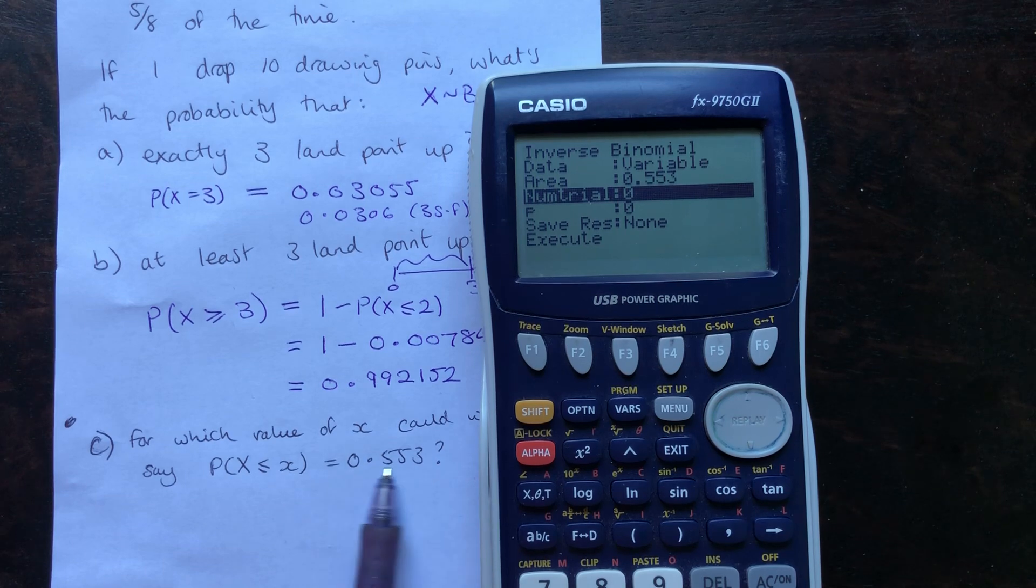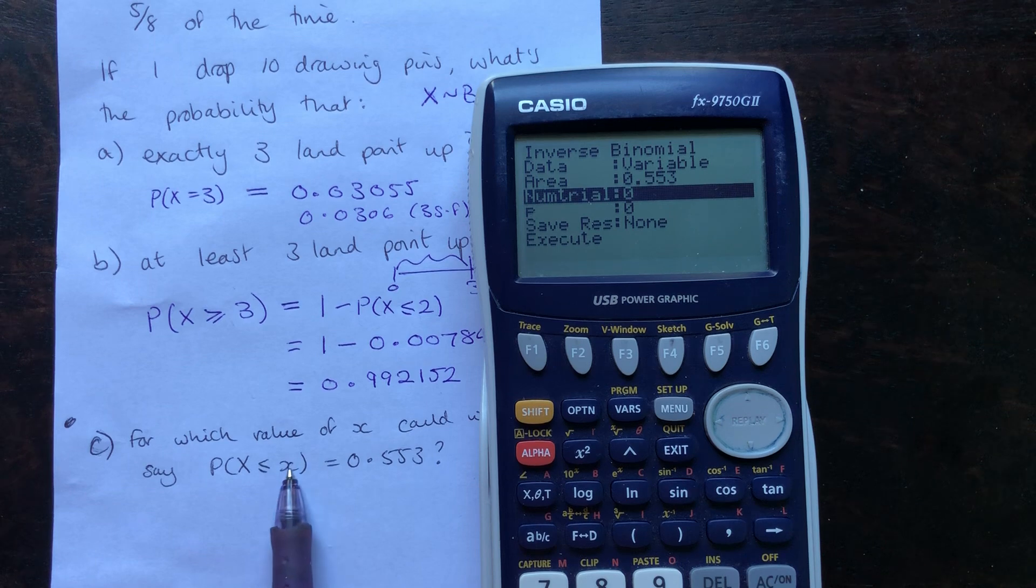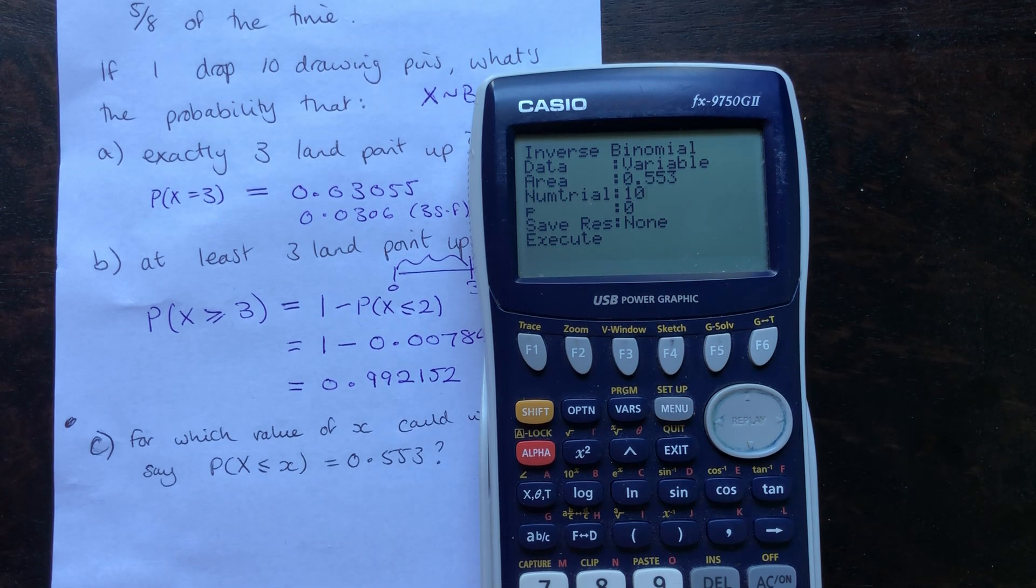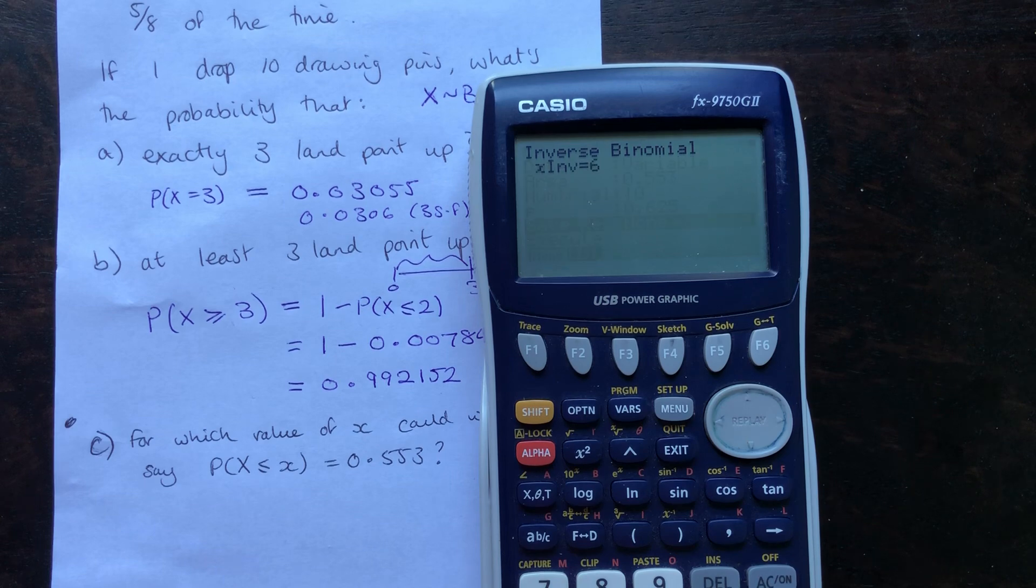That's the probability we're asked for in the question. If the probability is this, what was x to work it out? The number of trials is 10 and the probability of success is 5/8. Pop all of those in and press execute.